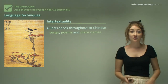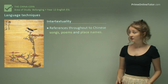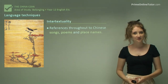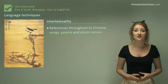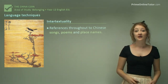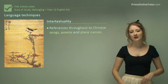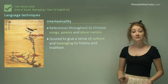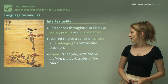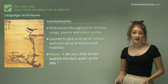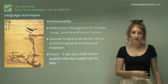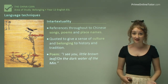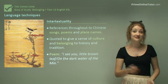The first technique is intertextuality. There are references throughout this work to traditional Chinese songs, poems and place names, which really builds up that sense of culture. We get a sense that the author has done a lot of research and has compiled a really good snapshot of Chinese culture. These are quoted to give a sense of culture and belonging to history and tradition. The poem 'I see you little brown leaf on the dark water of the Min' is a really good example — a traditional Chinese poem quoted at a family meal, showing the author drawing on different sources to construct a work representative of the culture as a whole.